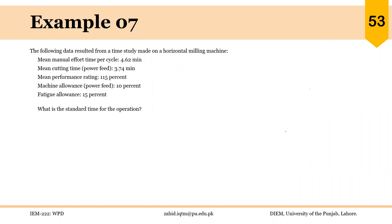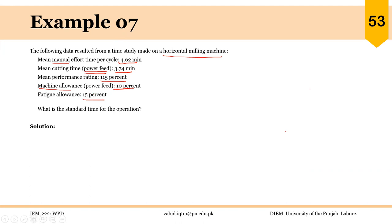Let's solve another example, which is different because it involves both manual cycle time and machining cycle time. The following data resulted from a time study on a horizontal milling machine. Mean manual effort time per cycle is 4.62 minutes and mean cutting time during power feed is 3.74 minutes. During power feed, there is no involvement of the worker. The mean performance rating is 115%, the machine allowance is 10%, and the worker allowance is 15%. What is the standard time for the operation?